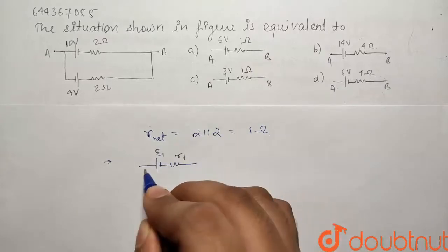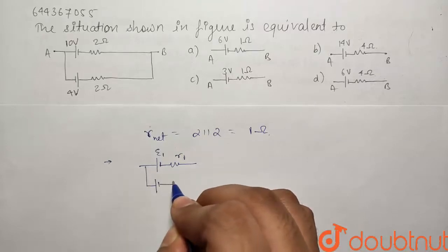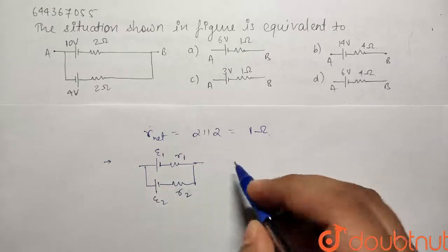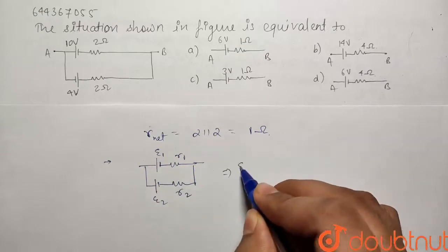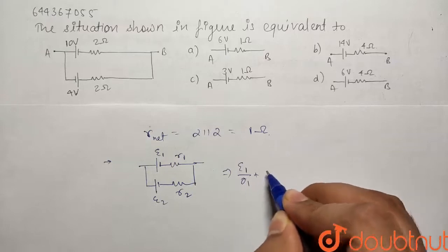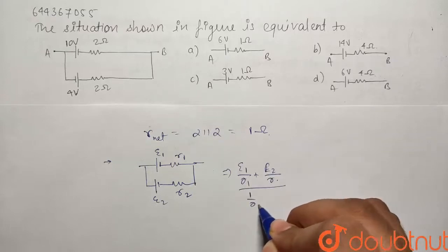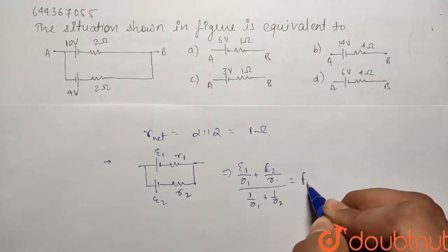So the net potential is given by the very important formula of E1 by R1 plus E2 by R2 divided by 1 by R1 plus 1 by R2. So this is the E net.